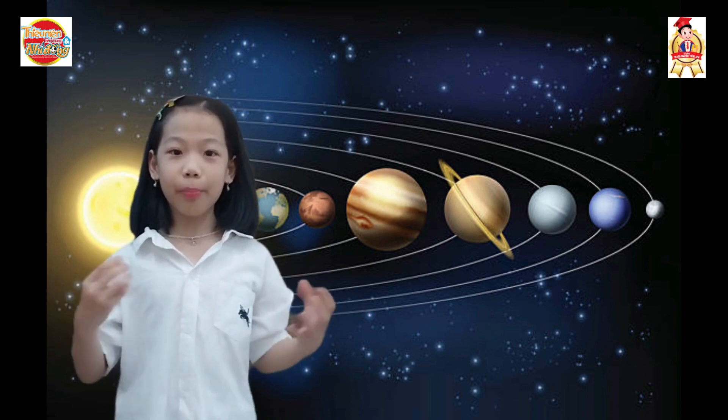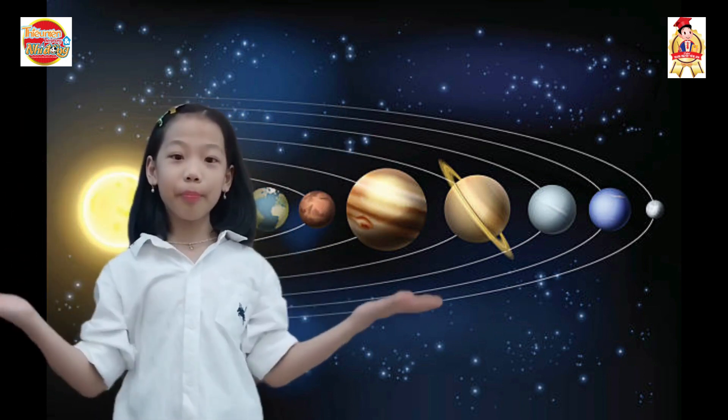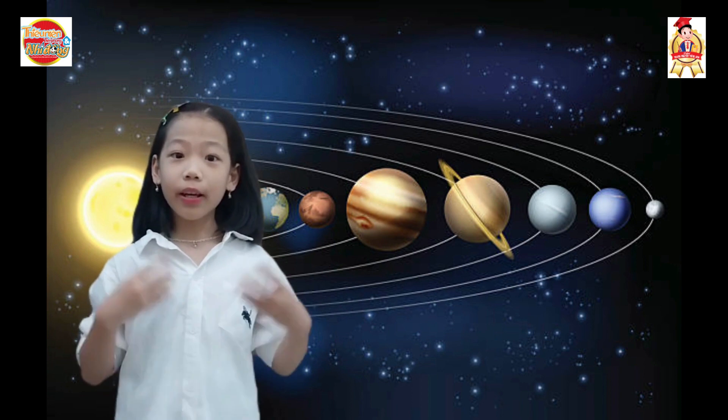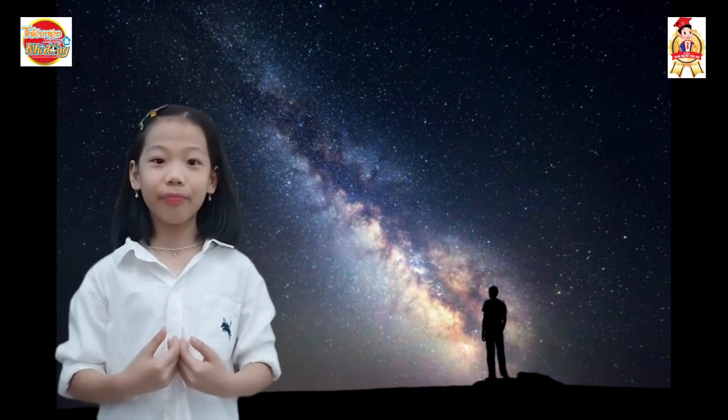Covering it is the Kuiper belt, and beyond the Kuiper belt is the Oort cloud. There are so many wonderful things about our universe, right? It's so big, reaching the number of infinity. We will just keep on learning and learning to discover more things, awesome things, about the universe.